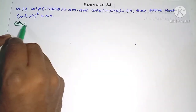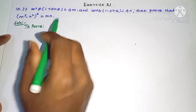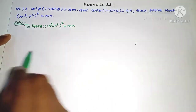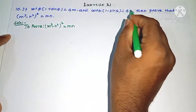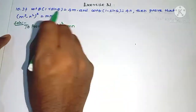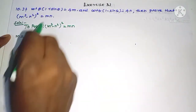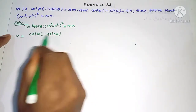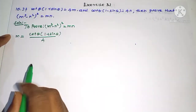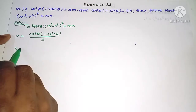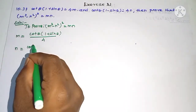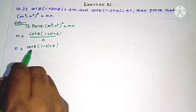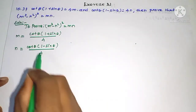Solution: First, we need to prove (m² - n²)² is equal to m into n. Here we have 4m and 4n values. So m value is cot θ into (1 + sin θ) divided by 4, and n is equal to cot θ into (1 - sin θ) divided by 4.